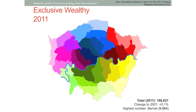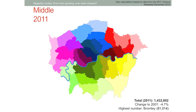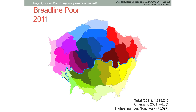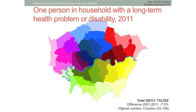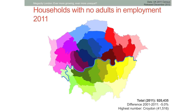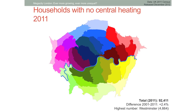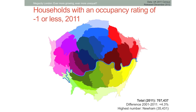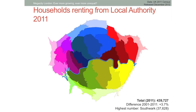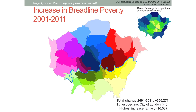Here we've stretched London. There are exclusive wealthy people in every borough, but these are the boroughs drawn to create a map of equality — the area of each borough is proportional to its share of exclusive wealthy. Clicking through to the middle group shows how the shape changes, and clicking through again to breadline poor shows a very different London: London shaped by people in low-income households, London shaped by long-term health problems or disability, households with no adult in employment, Londoners with no central heating, private rented London, overcrowded London, no-car London, and local authority renting London.